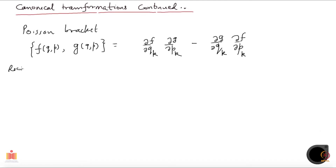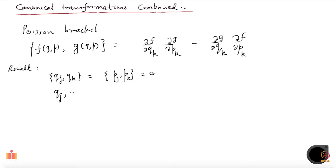Also recall that if you take qj and qk — two of the coordinates — or two of the conjugate momenta, say pj and pk, then their Poisson brackets are 0. However, if you take one of them to be a coordinate and the other one to be a conjugate momentum, then this is δjk. So unless j is equal to k this will be 0, and when j equals k then {qj, pj} will be 1. These are called fundamental Poisson brackets.